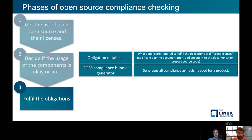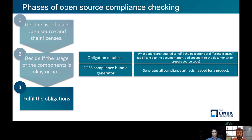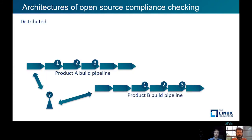The next and last step is to fulfill the obligations. For this we need two things: an obligation database containing information about what obligations each license imposes and how to fulfill them practically, and a compliance bundle that fulfills all the obligations — such as a list of copyright holders in documentation, including license texts in documentation, or packaging code for distribution.